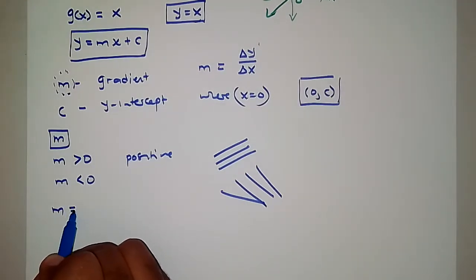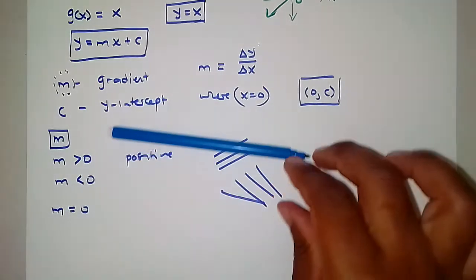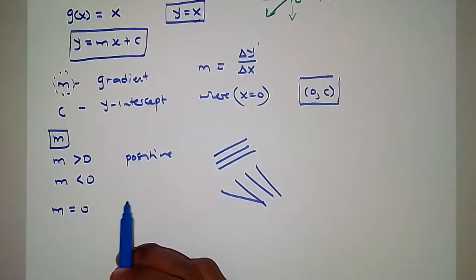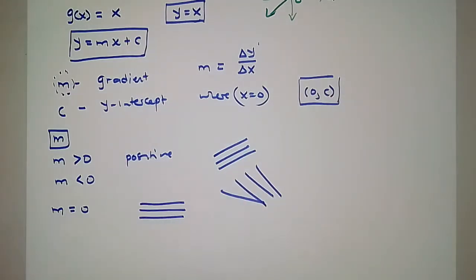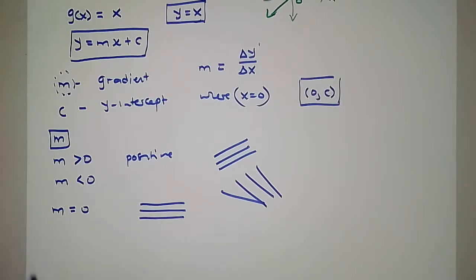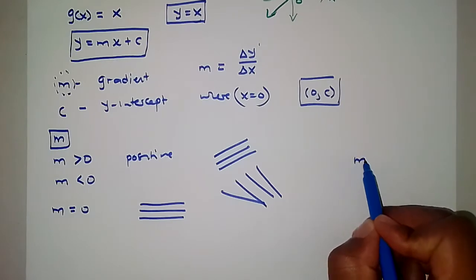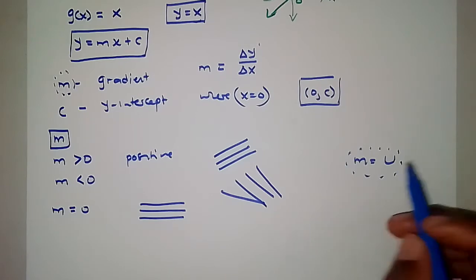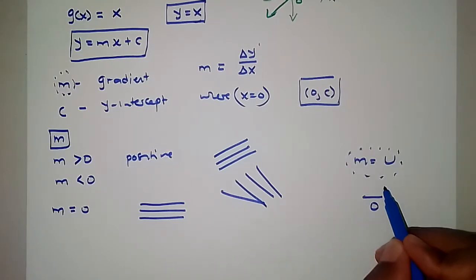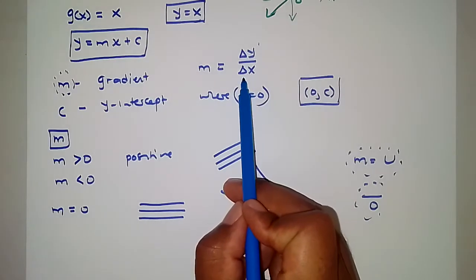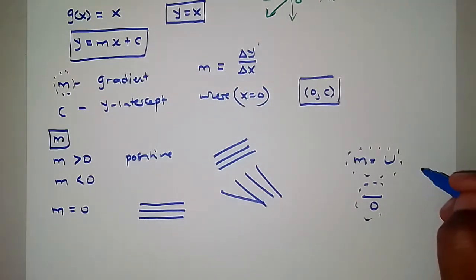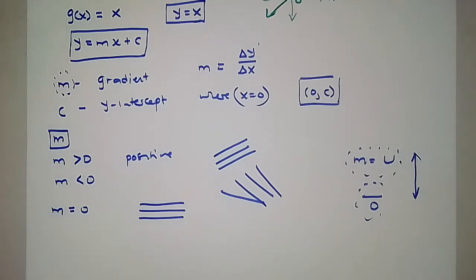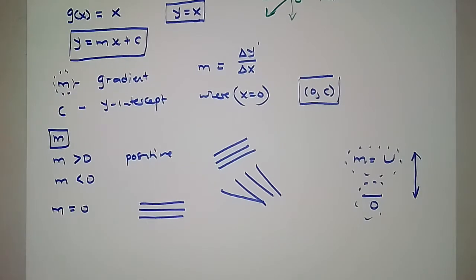When m equals zero, your line is going to be a horizontal line. And when m is undefined — which happens when you divide by zero — that is for vertical lines.